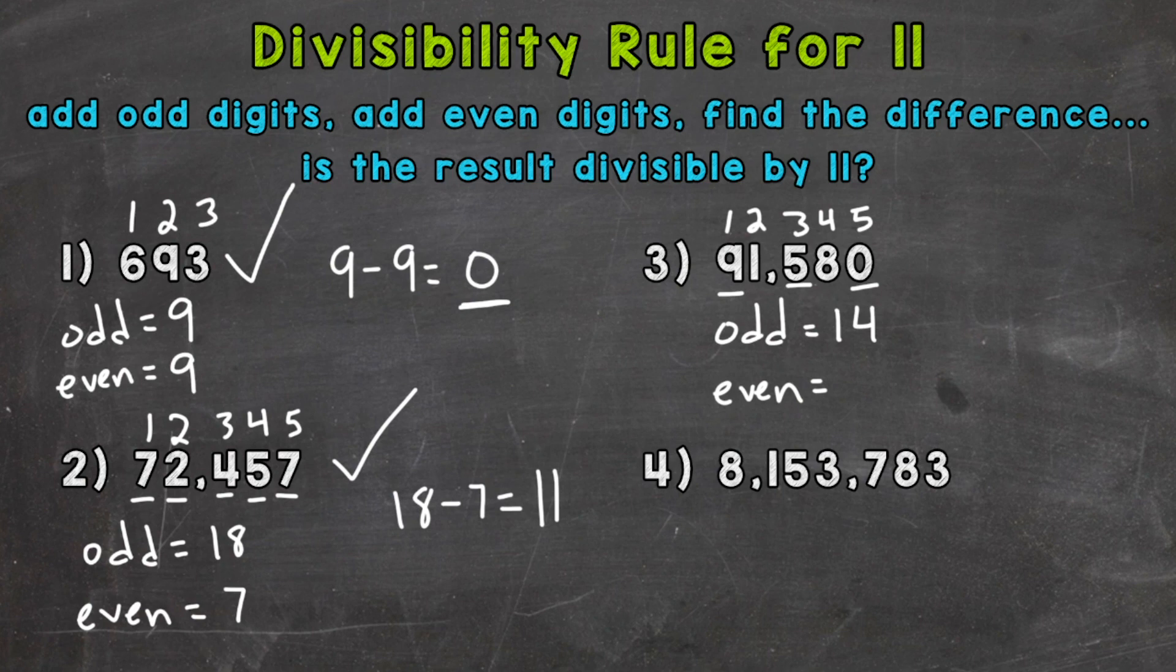Now even, we have 1 plus 8, which is 9. So 14 minus 9 gives us 5. 5 is not divisible by 11. Therefore, 91,580 is not divisible by 11 either.